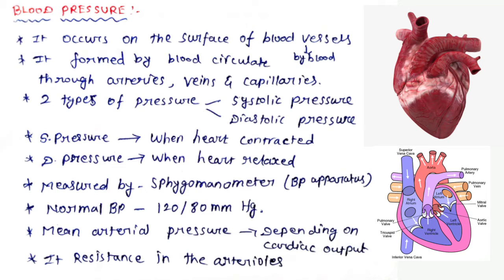Blood pressure occurs on the surface of blood vessels by blood circulation through arteries, veins, and capillaries. There are two types of blood pressure: systolic blood pressure and diastolic blood pressure. Blood pressure is measured by a sphygmomanometer, also called a BP apparatus.